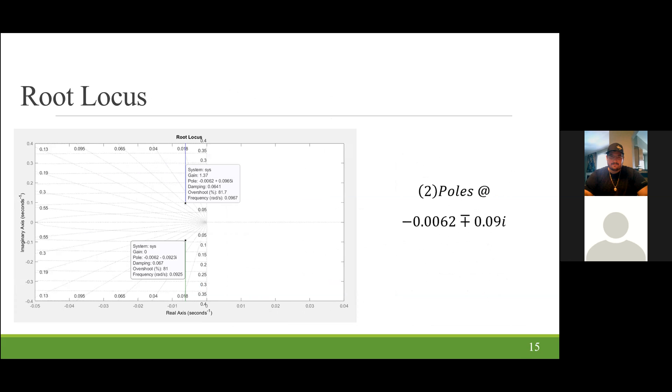Here we have the root locus, which also just states that we have two poles and no zeros. These poles have gains of 1.37 and a gain of zero on the same one.